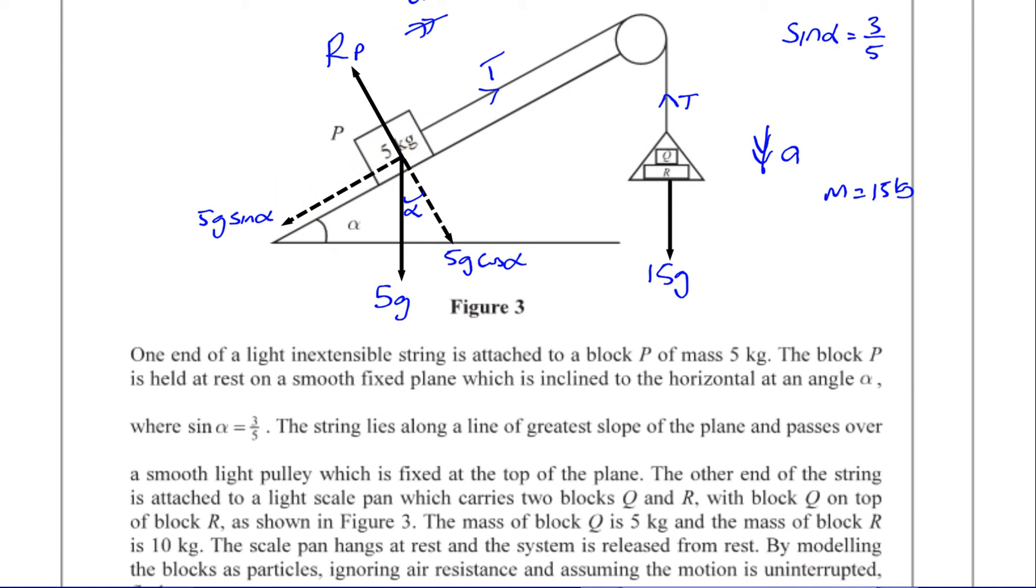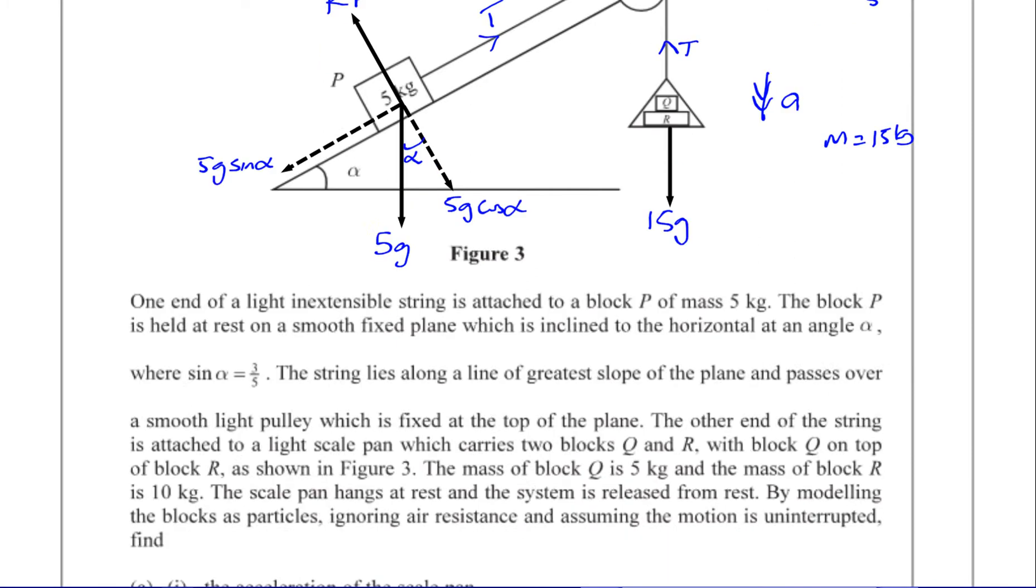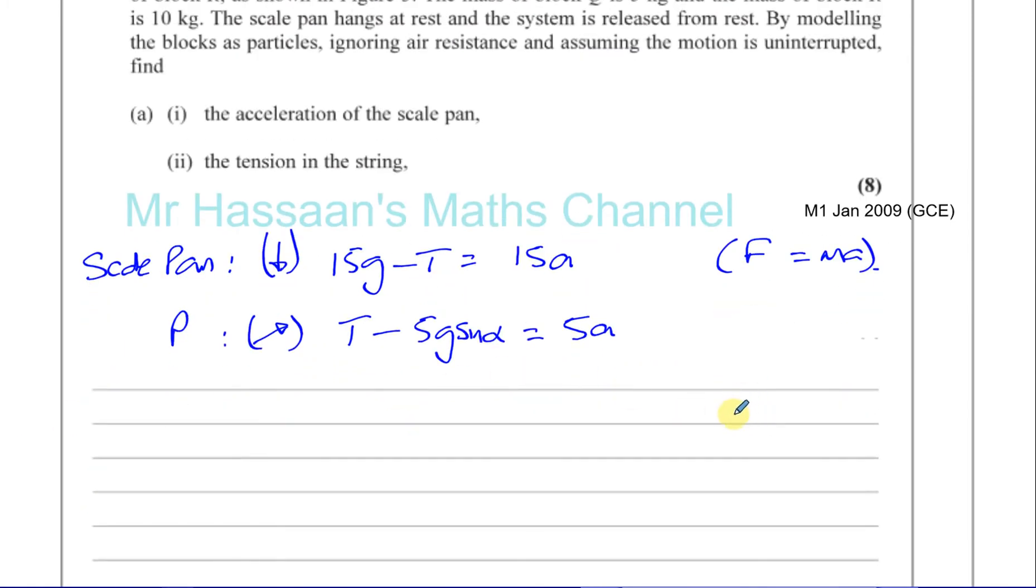Now I know that sine alpha is 3 over 5, so I can find what T is here and what a is by adding these two together. So let me just simplify this. Sine alpha is equal to 3 fifths.